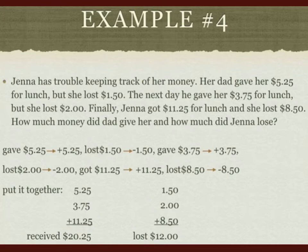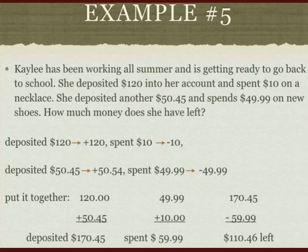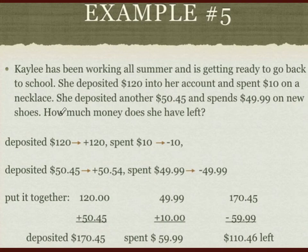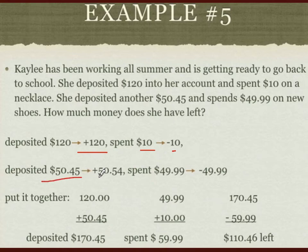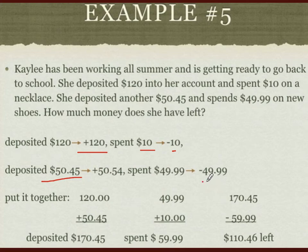Let's have the fifth example. Kaylee has been working all summer and is getting ready to go back to school. She deposited $120 into her account and spent $10 on a necklace. She deposited another $50.45 and spent $49.99 on new shoes. How much money does she have left? She deposited $120 — positive. Spent $10 — negative. Deposited another $50.45 — positive. Spent $49.99 on shoes — negative.